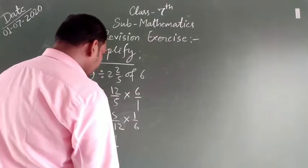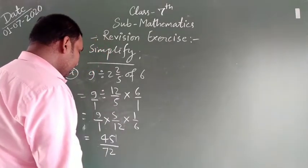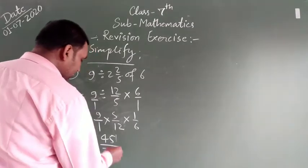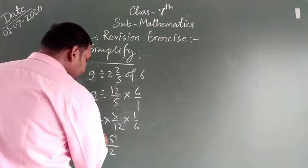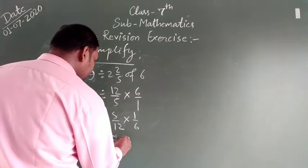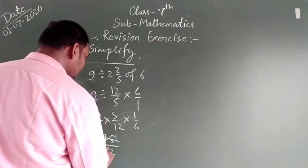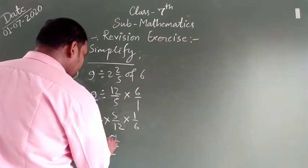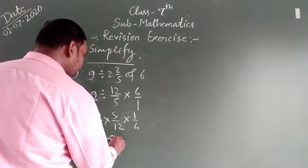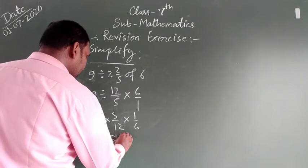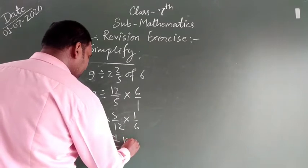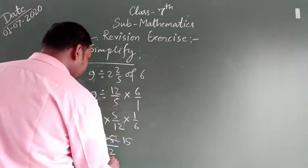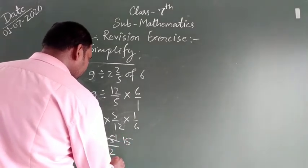If we want to change it to mixed fraction, we can. If we want to simplify it, we divide by 3. So 3 divides 45 to give 15, and 3 divides 72 to give 24. So the simplified answer is 15 upon 24.